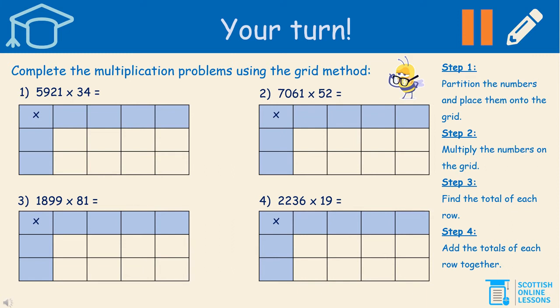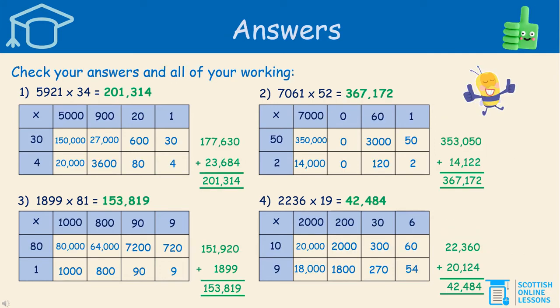Now it's your turn. You've seen how it's done — now I want you to have a go. Complete the multiplication problems using the grid method. The grids have been included for you, but you'll need to draw them out. If you use a ruler, it keeps them nice and tidy. The different steps for you to follow are down the right-hand side for your assistance. Pause the lesson now and complete this task. Here are the answers — check yours and make sure you check all of your working as well. You may want to pause the lesson just now as there's quite a lot to take in on the screen.